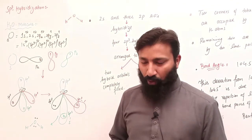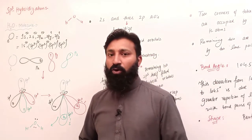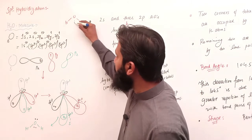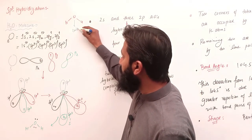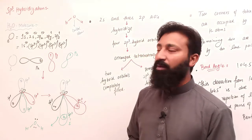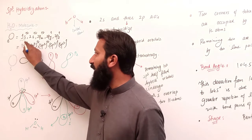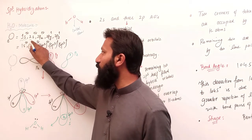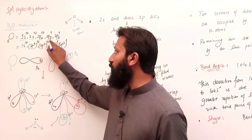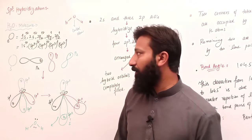इसमें total हमारे पास three atoms हैं। उन three atoms में से central atom है oxygen। Central atom oxygen का atomic number 8 है, और electronic configuration है: 1S², 2S², 2Px², 2Py¹, 2Pz¹।